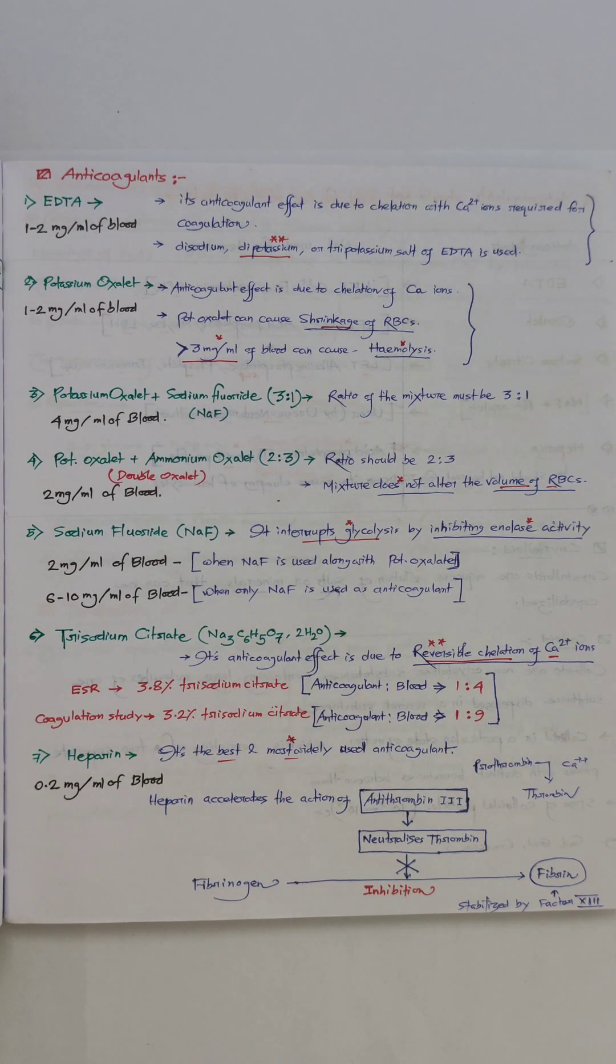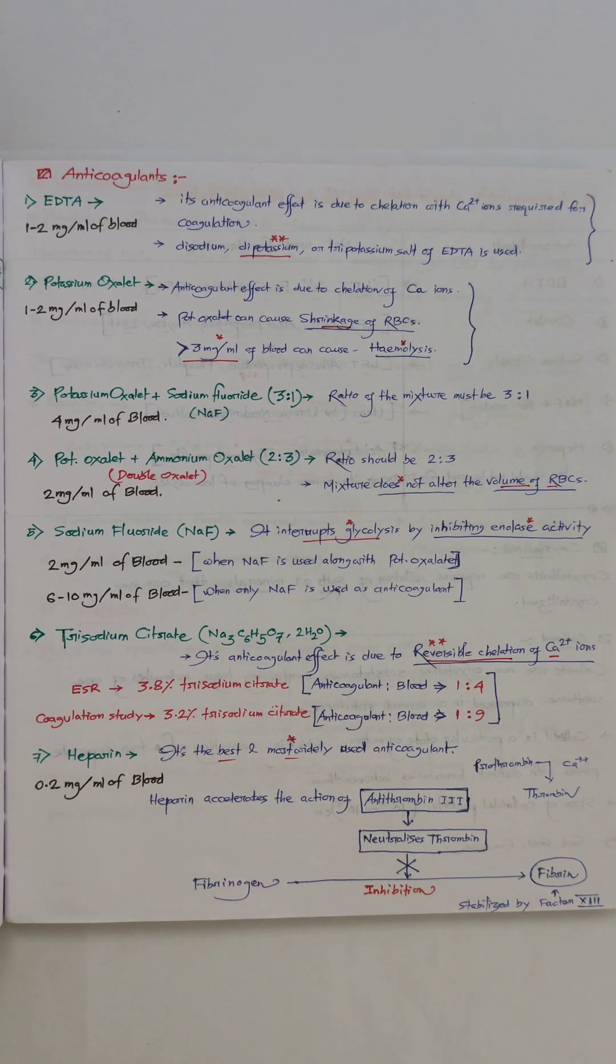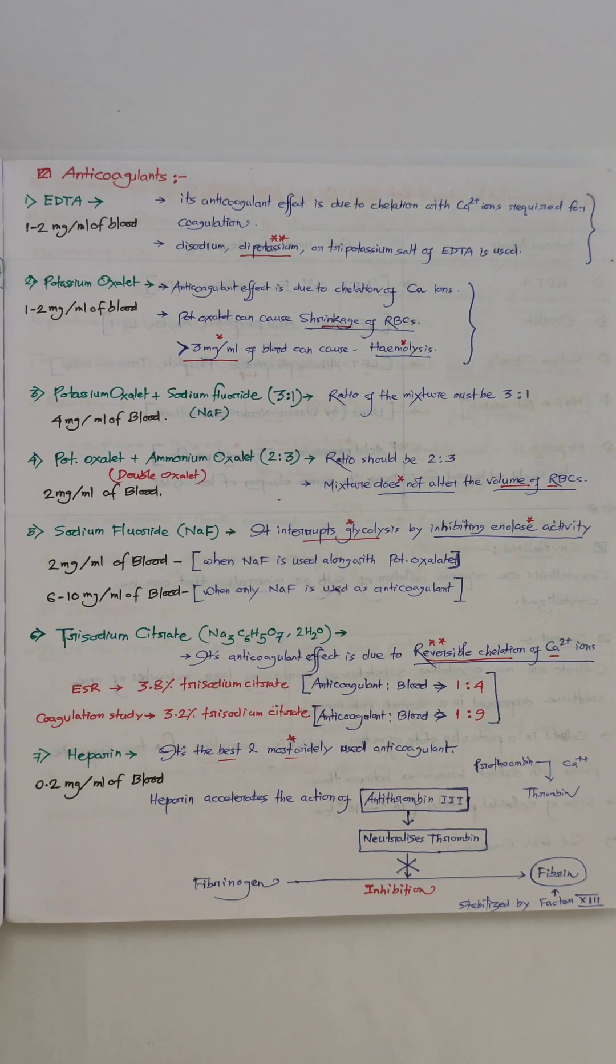Number seven, heparin. It is the best and most widely used anticoagulant. You can easily see that the quantity of heparin is very low—a small amount is enough for anticoagulation activity. Usually 0.2 milligrams per ml of blood is required.